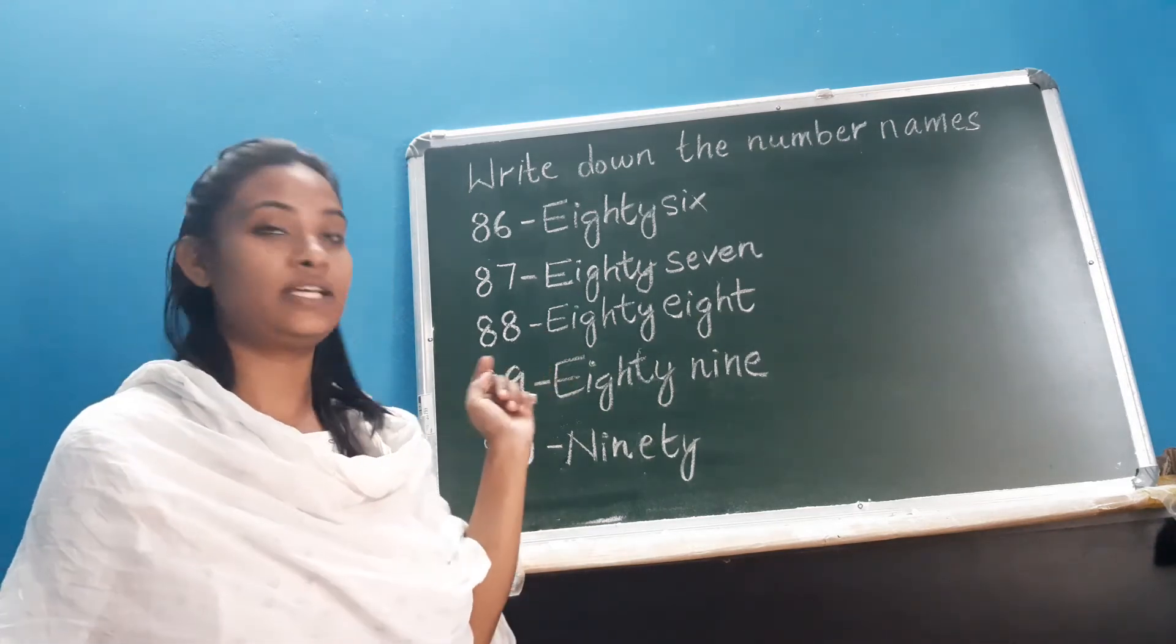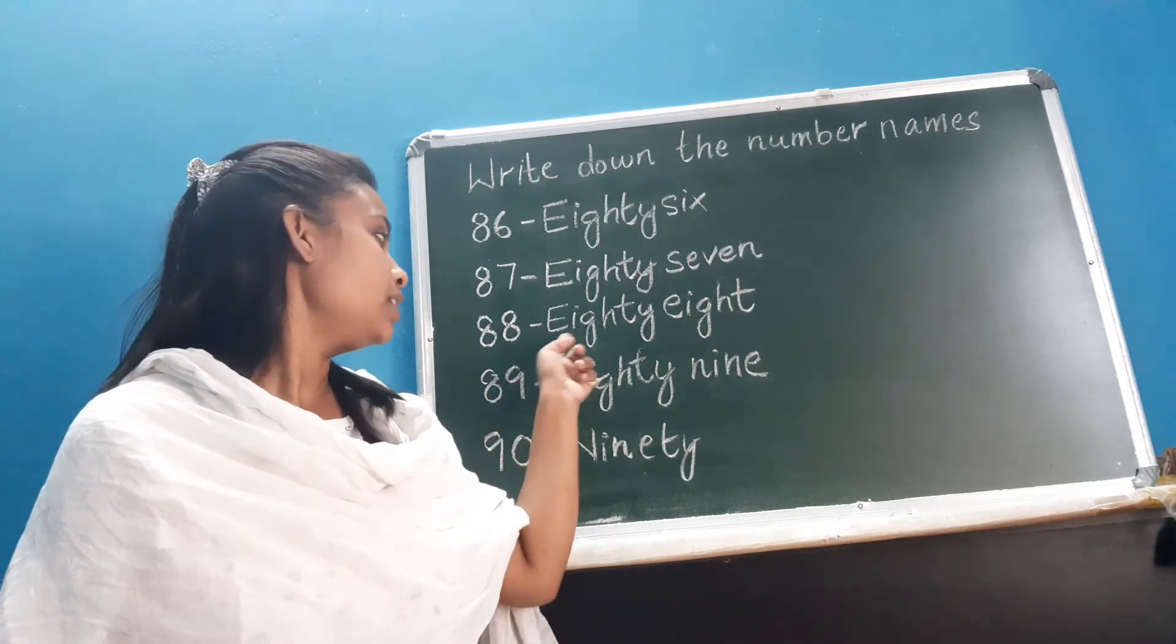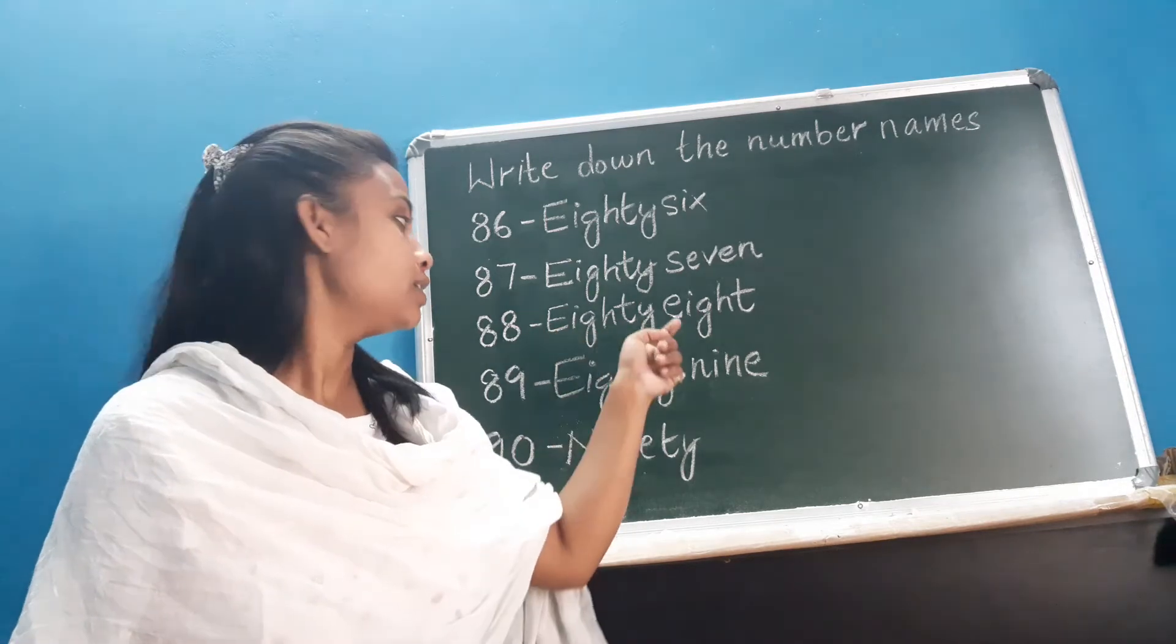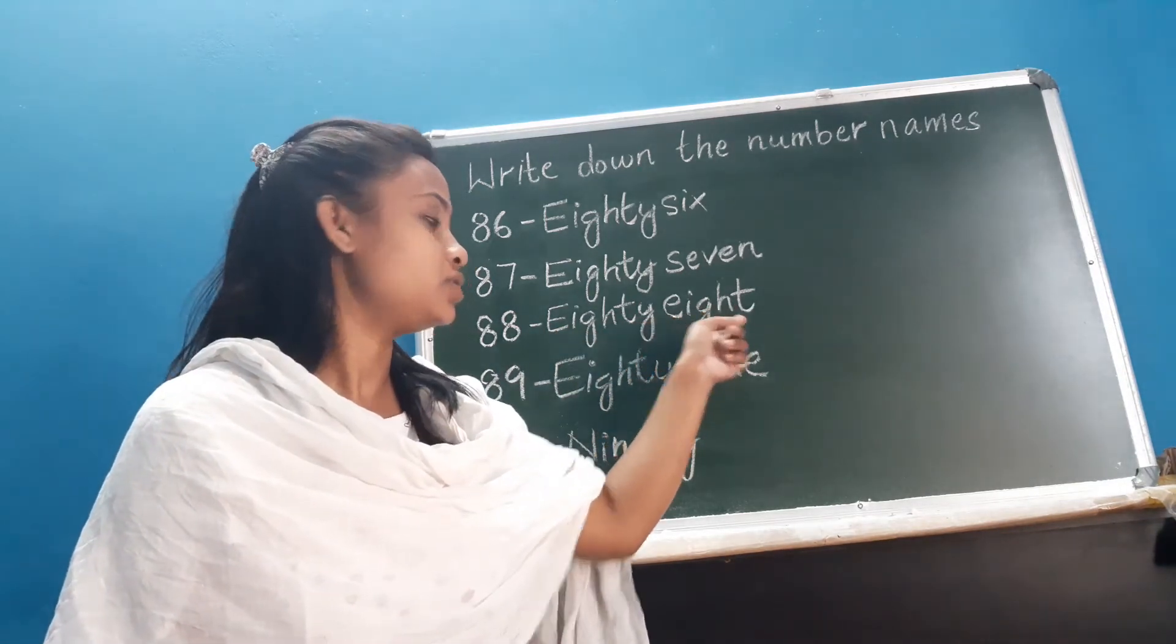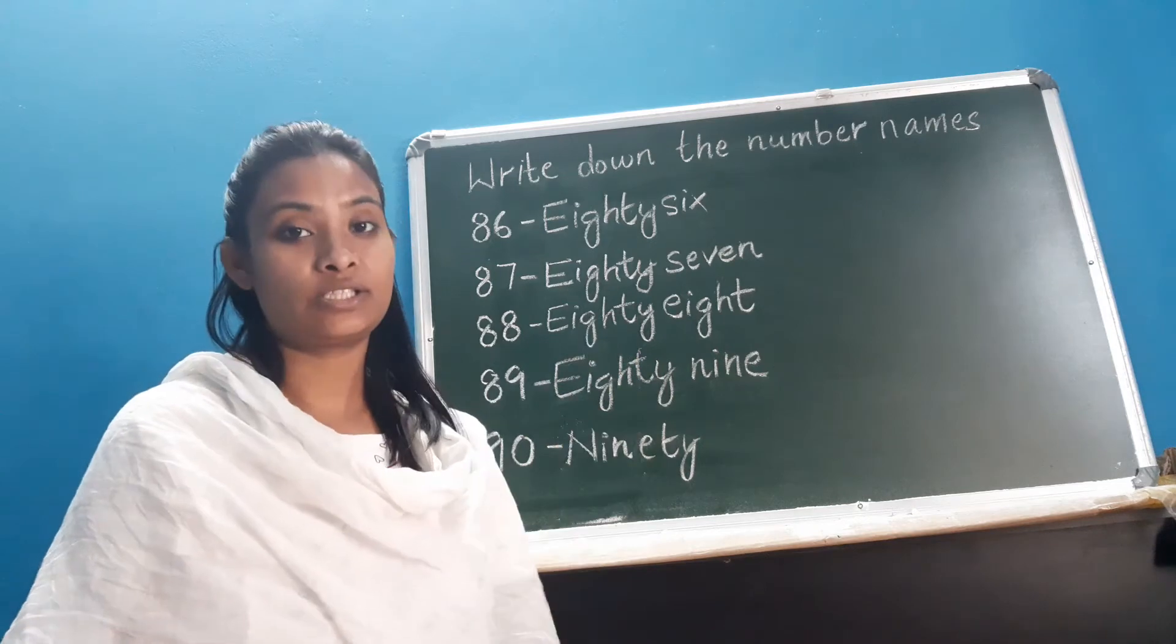Now next, 88. E, I, G, H, T, Y, eighty, E, I, G, H, T, Y, eighty eight, eighty eight. Okay, I repeat.